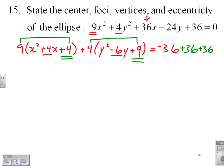Okay, at this point, I should have perfect square trinomials. And I get 9 times x plus 2 squared plus 4 times y minus 3 squared equals just 36.